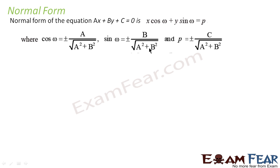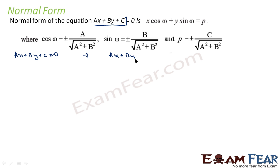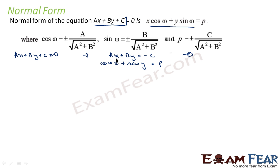Now let's take the normal form. The normal form is x·cosω + y·sinω = p. We can rewrite ax + by + c = 0 as ax + by = −c. This is equation (1), and equation (2) is x·cosω + y·sinω = p. These two equations have the same pattern.